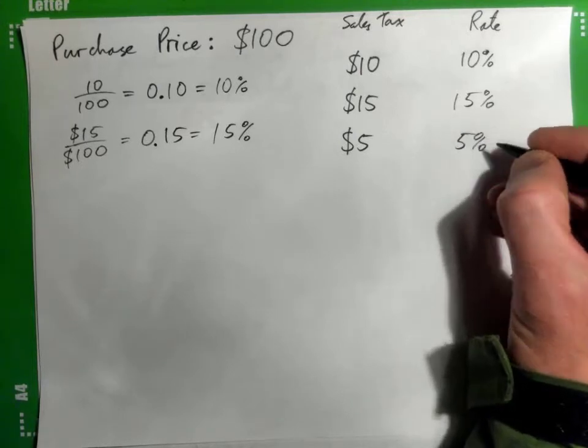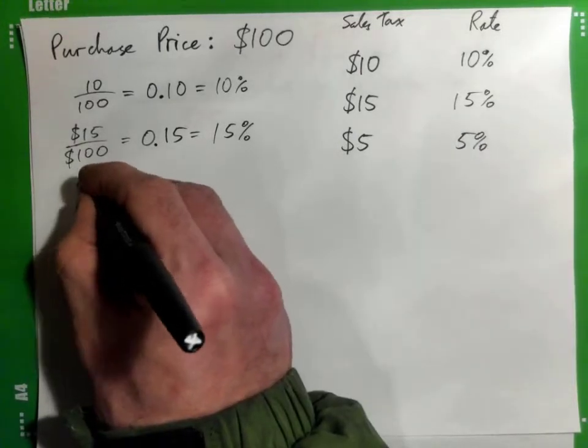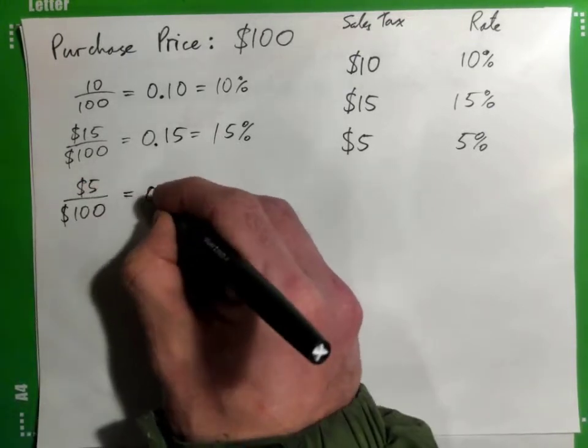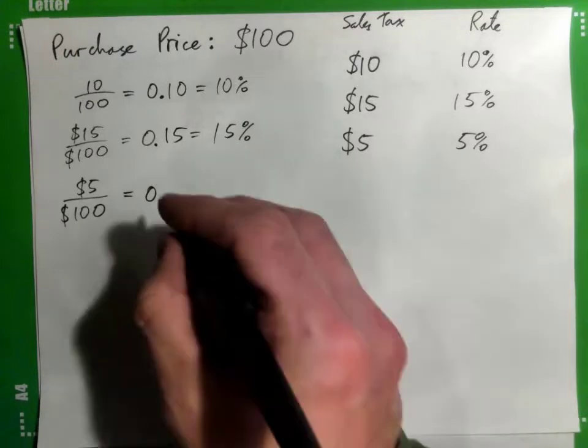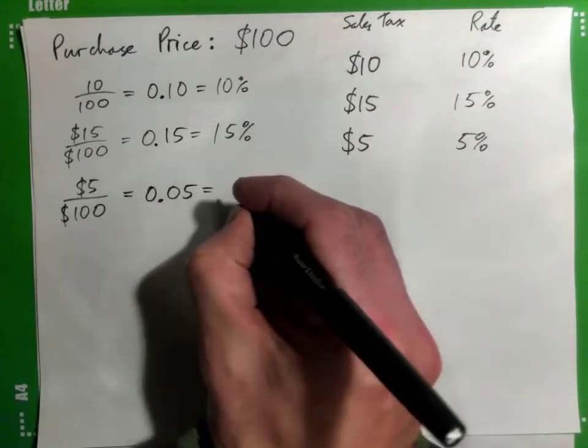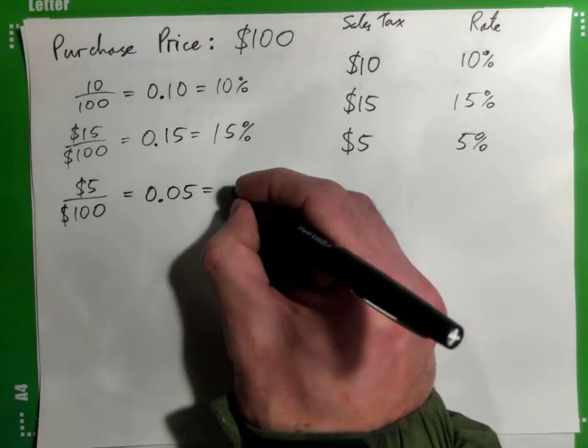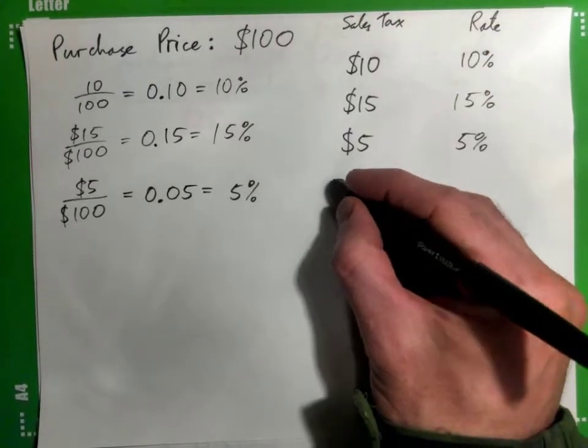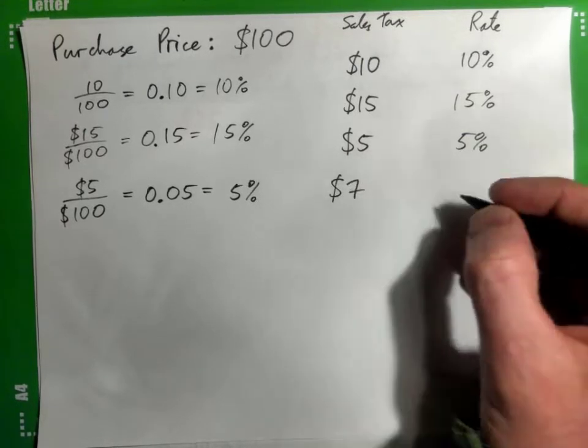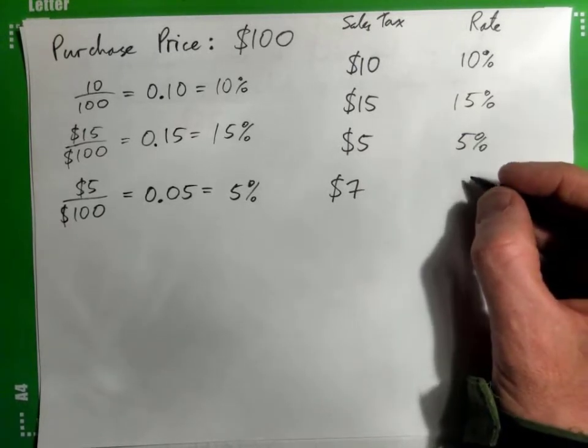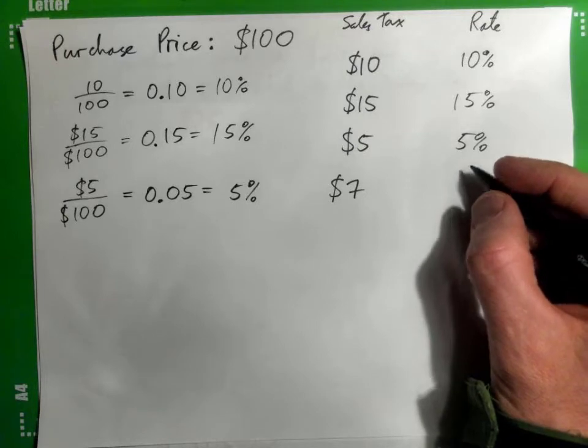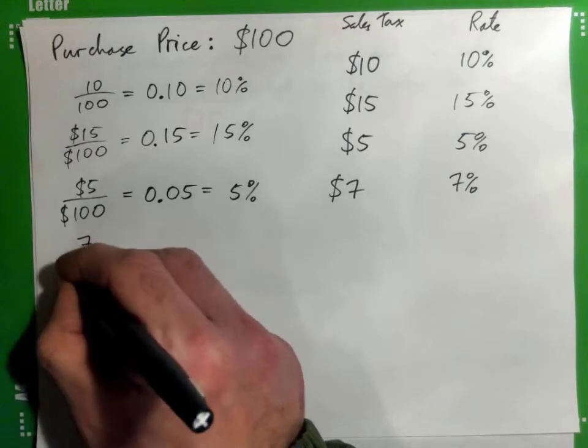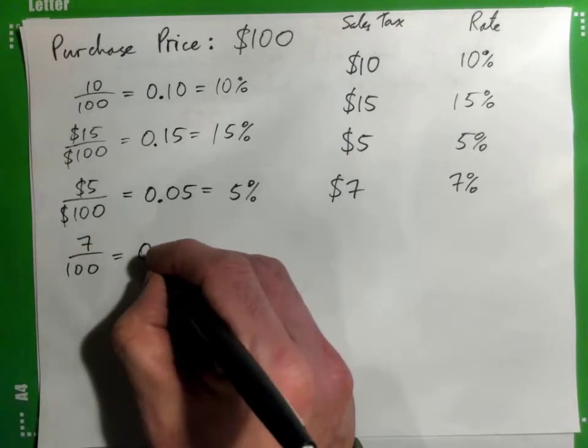If the sales tax is $5, what's the rate? 5%. Why? Because $5 over $100 is simply 0.05, and that is, as a percentage, 5%. If the purchase price is $100 and the sales tax was $7, what would the sales tax rate be? 7%. Why? 7 over 100, 0.07, that's 7%.